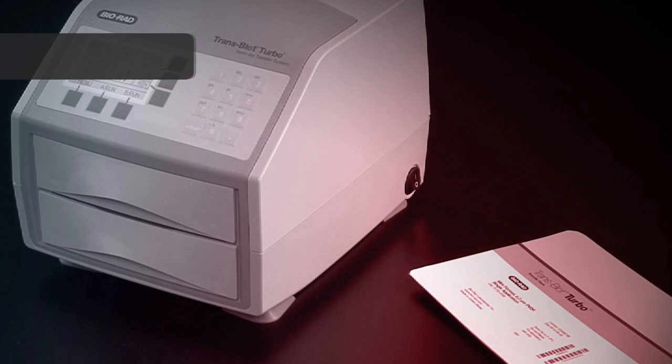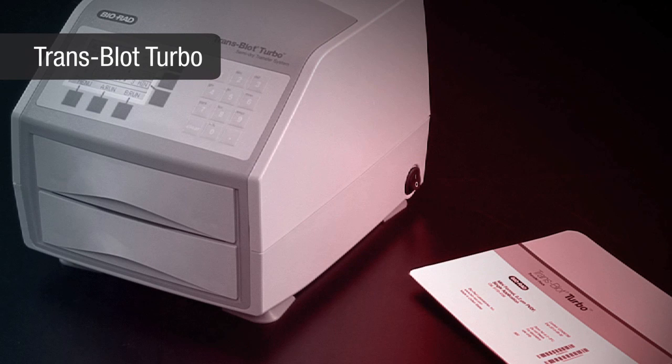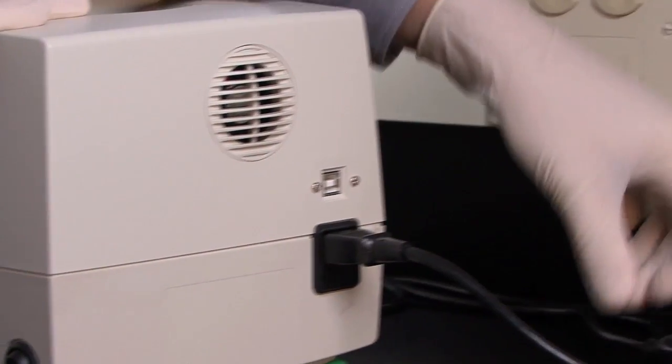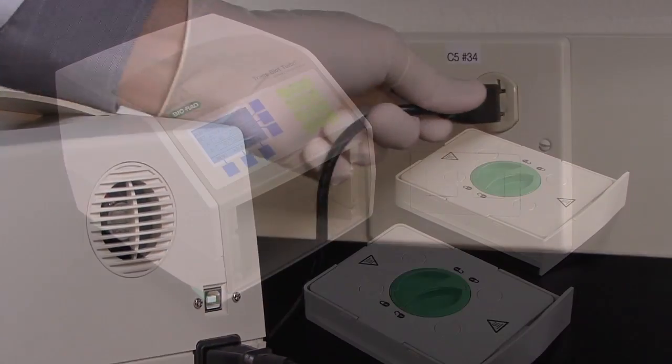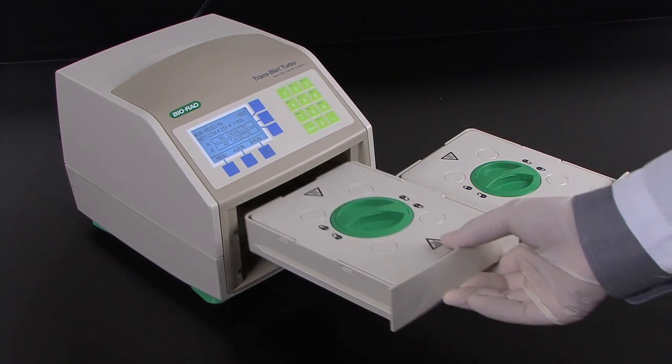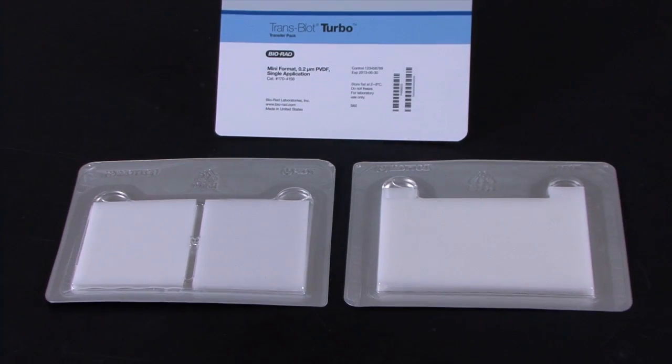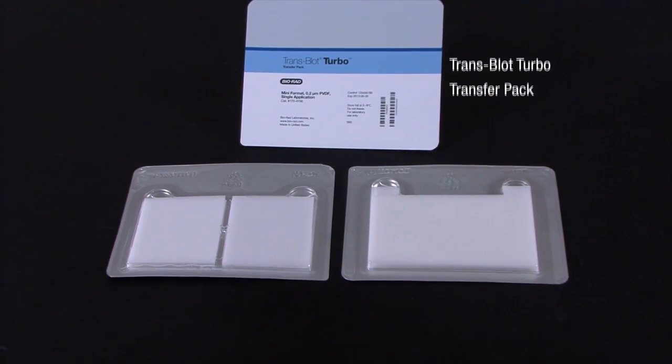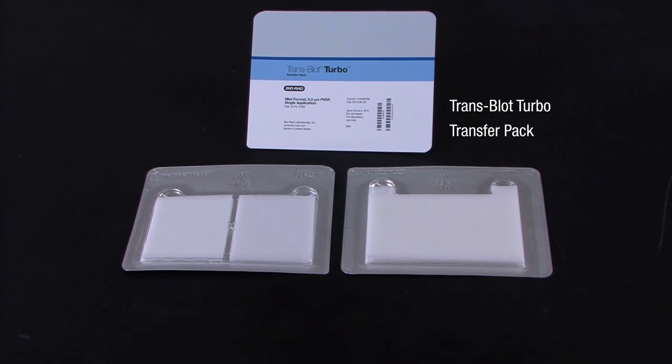The Trans-Blot Turbo system, on the other hand, requires only two items to transfer your gel: the Trans-Blot Turbo unit and a Trans-Blot Turbo transfer pack. The Trans-Blot Turbo unit contains an integrated power supply and has two transfer cassettes. The transfer packs contain a membrane, buffers, and filter paper all in a single ready-to-use package.